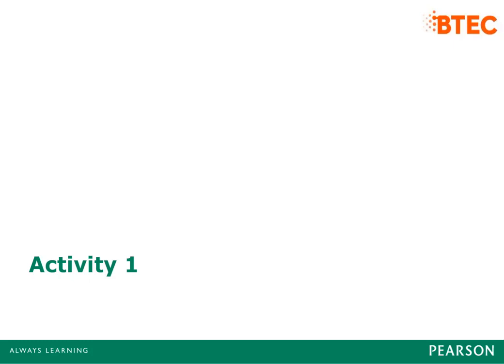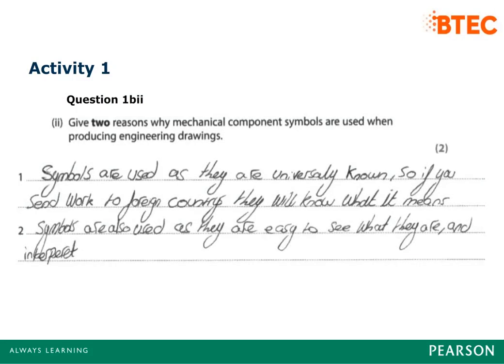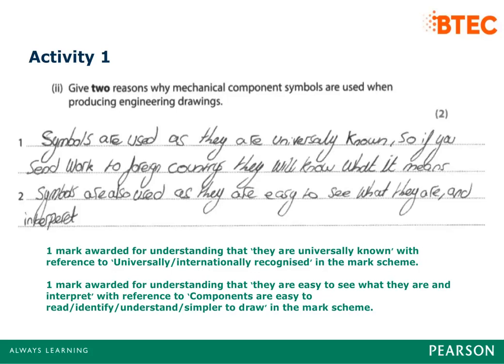Activity 1: Look at the example above. Using the mark scheme, decide what mark you think should be awarded and why. The answer: one mark was awarded for understanding that symbols are universally known, with reference to 'universally or internationally recognised' in the mark scheme. One mark was awarded for understanding that they are easy to see and interpret, with reference to 'components are easy to read, identify, understand, simpler to draw' in the mark scheme.